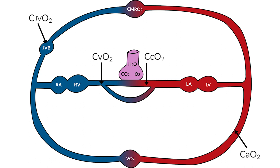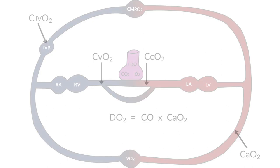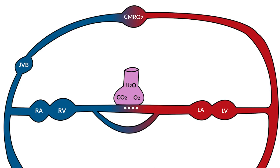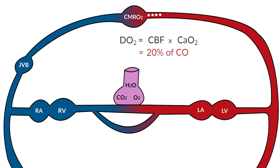Which brings us to the next equation: delivery of oxygen, which is equal to cardiac output multiplied by the arterial content of oxygen. You'll recall delivery of oxygen DO2 from this graph. Parameters that influence the delivery of oxygen are both your cardiac output and the content of oxygen in the blood. Similarly, it can be stated that delivery of oxygen to the brain equals cerebral blood flow multiplied by CaO2, and this is approximately 20% of your cardiac output that goes to the brain.